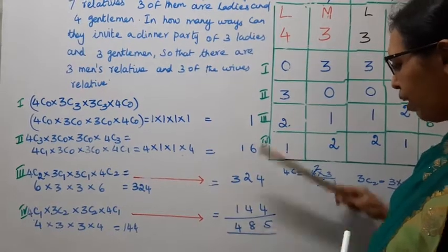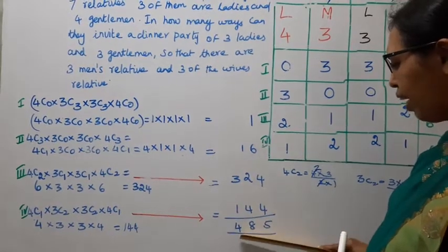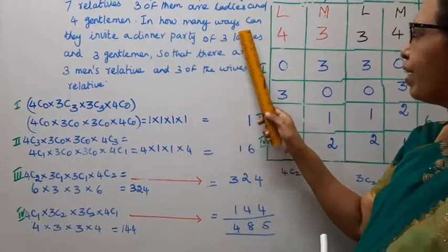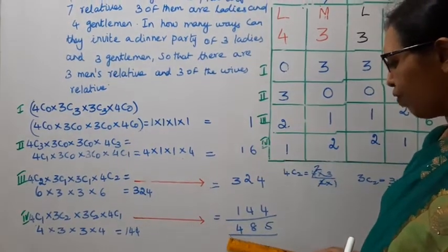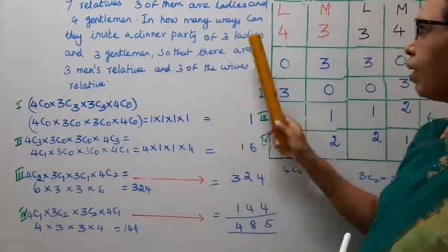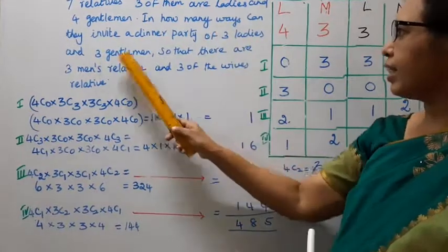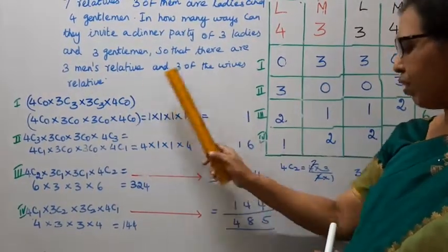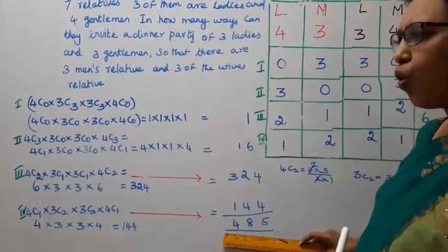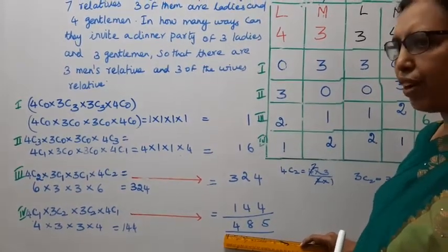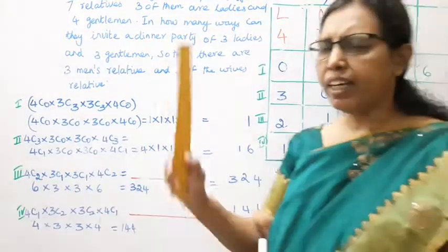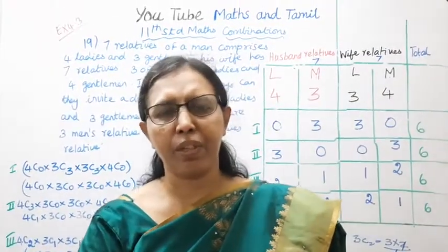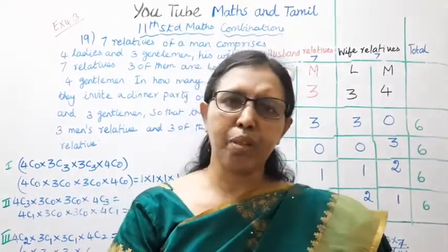Then 1 plus 16 plus 324 plus 144, adding all together, the answer is 485. In how many ways can we get 3 ladies and 3 gentlemen so that there are 3 men's relatives and 3 of the wives' relatives — we get 485 ways. Now practice; this channel helps you to get 100 marks.